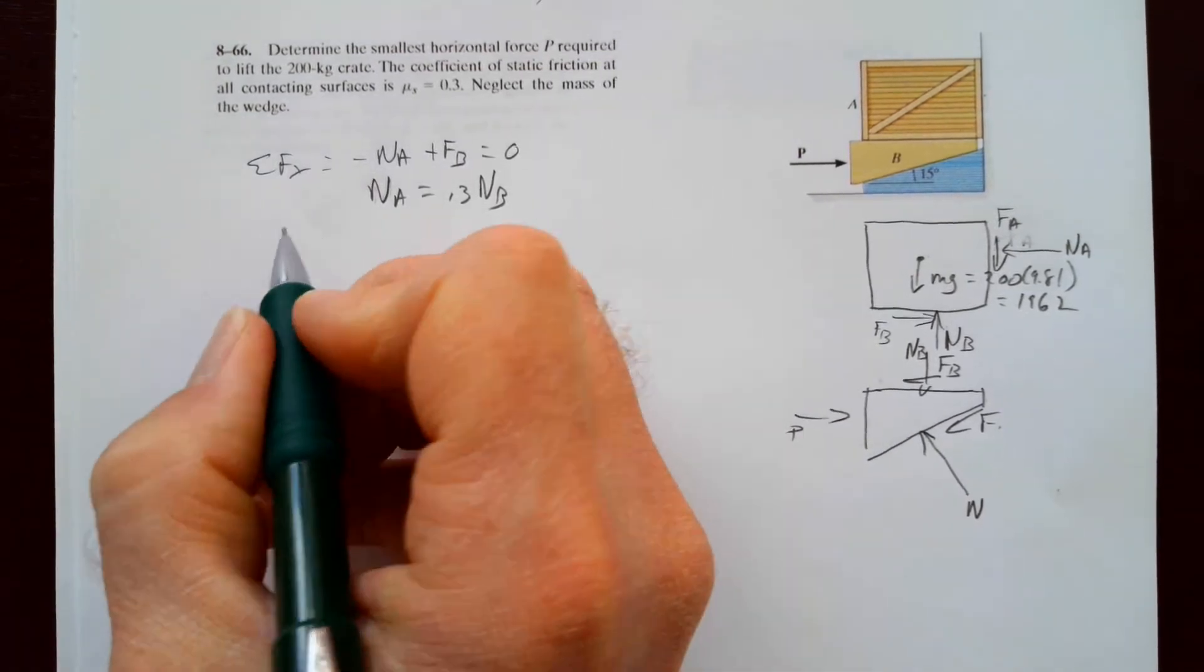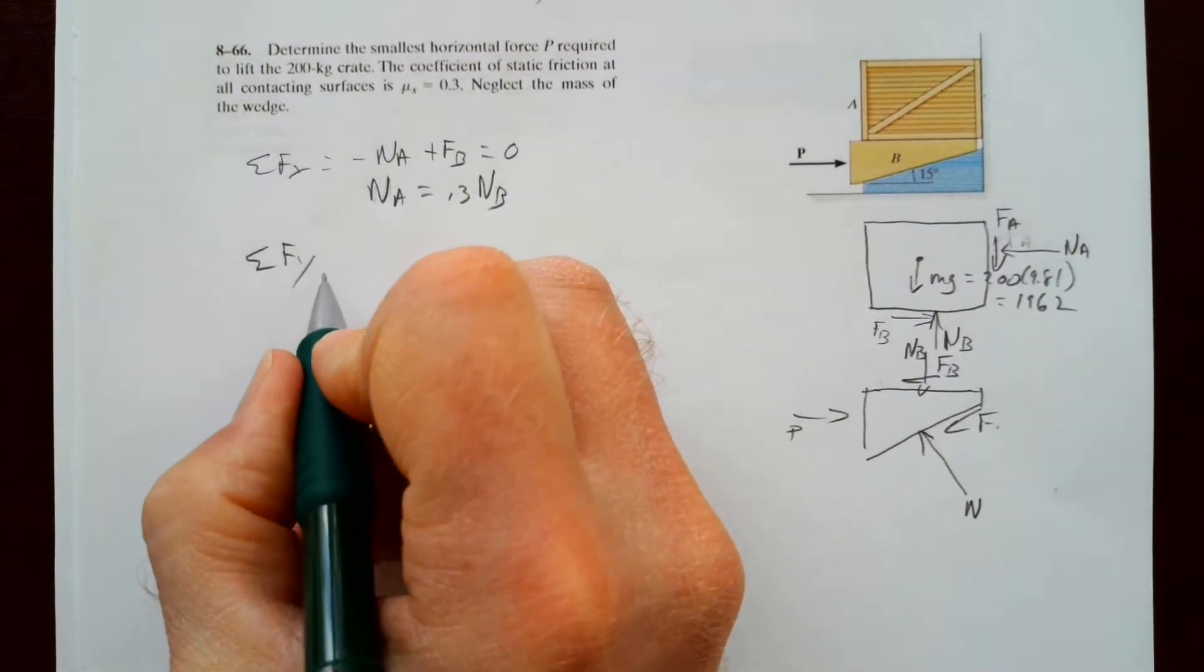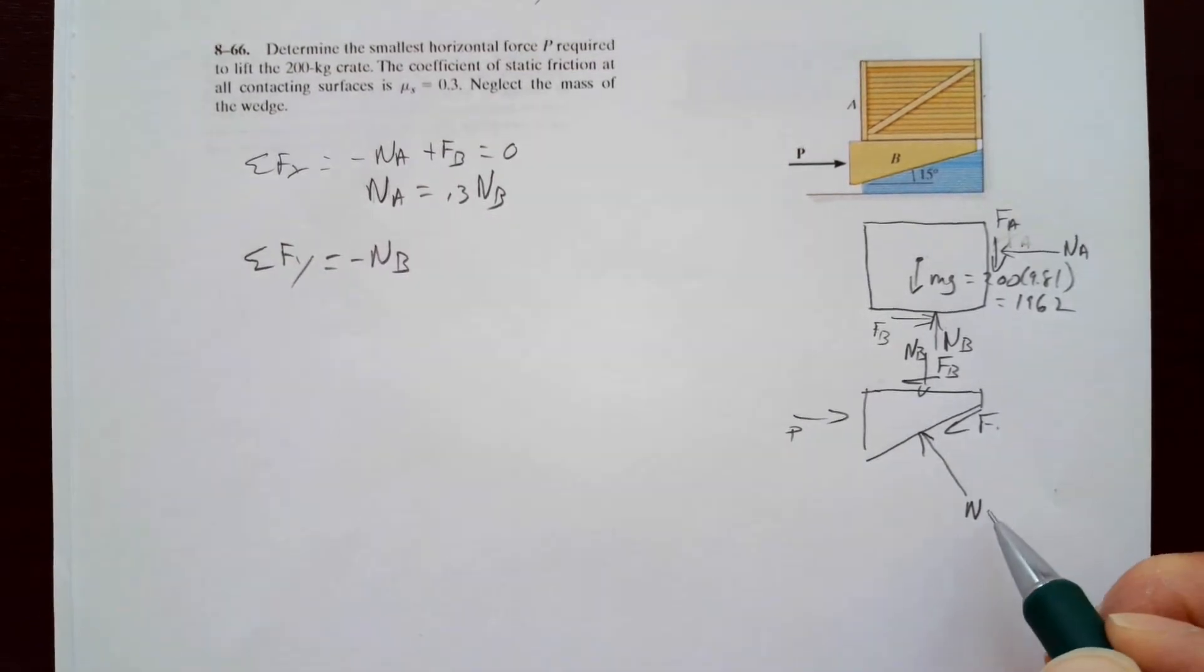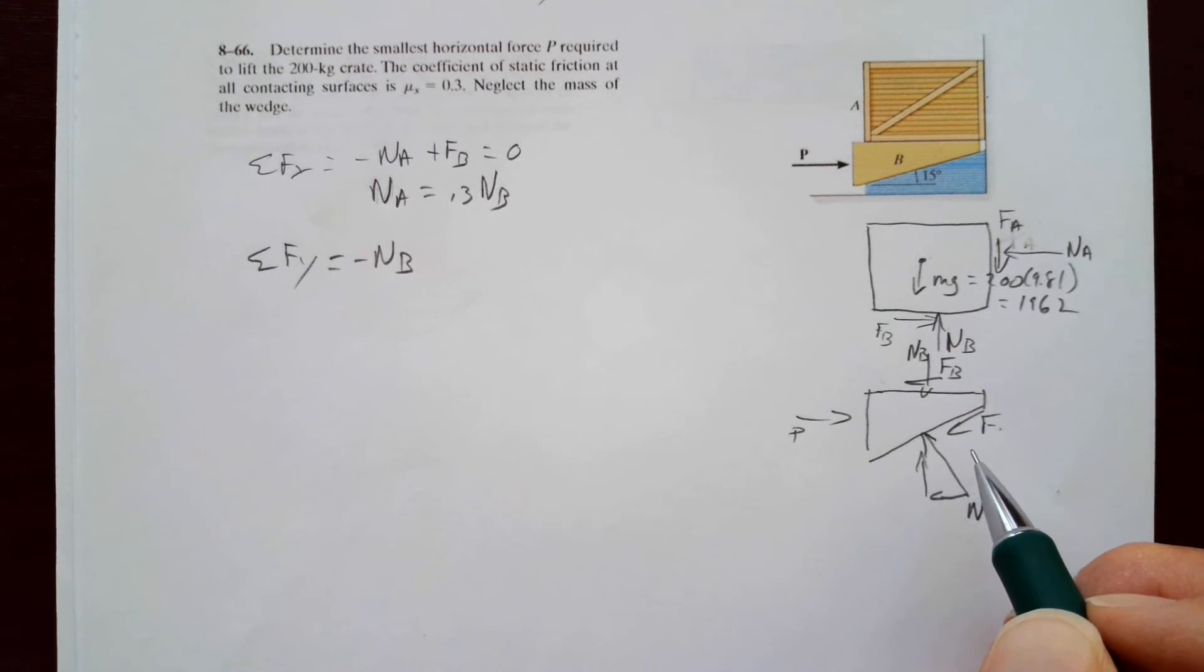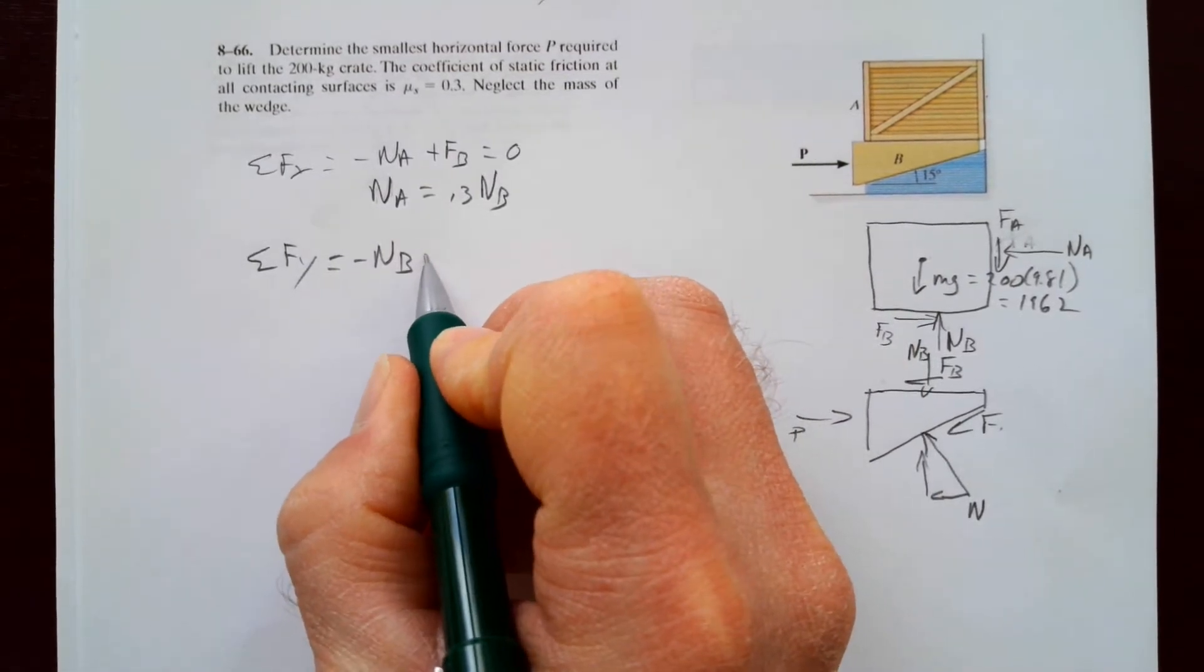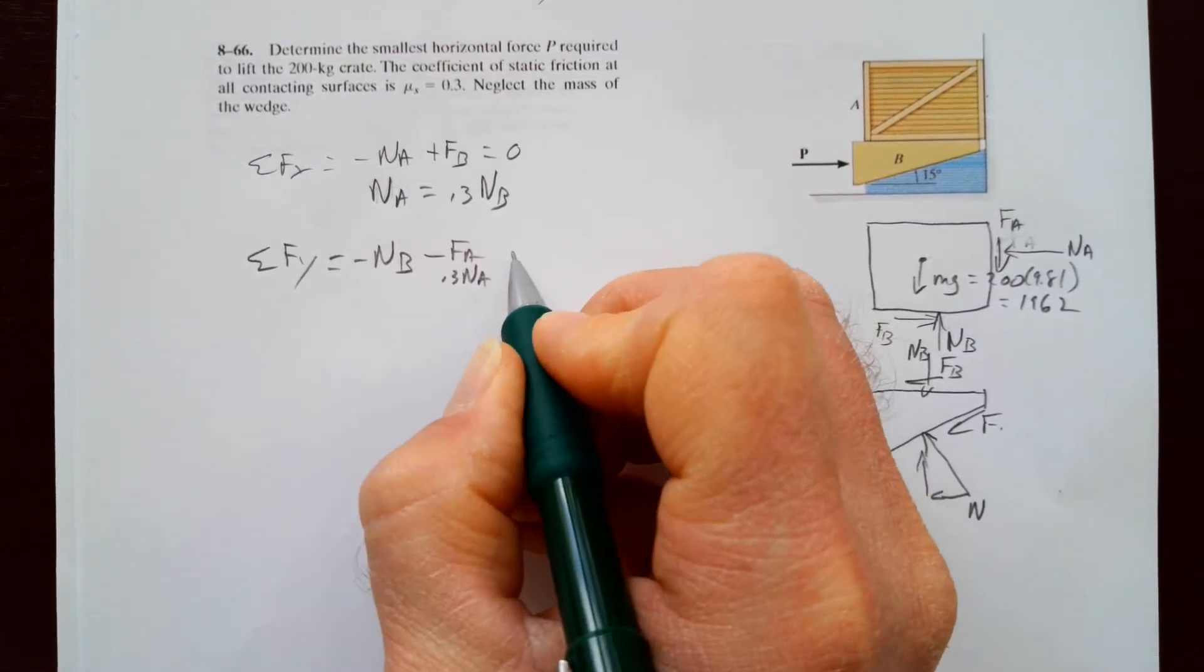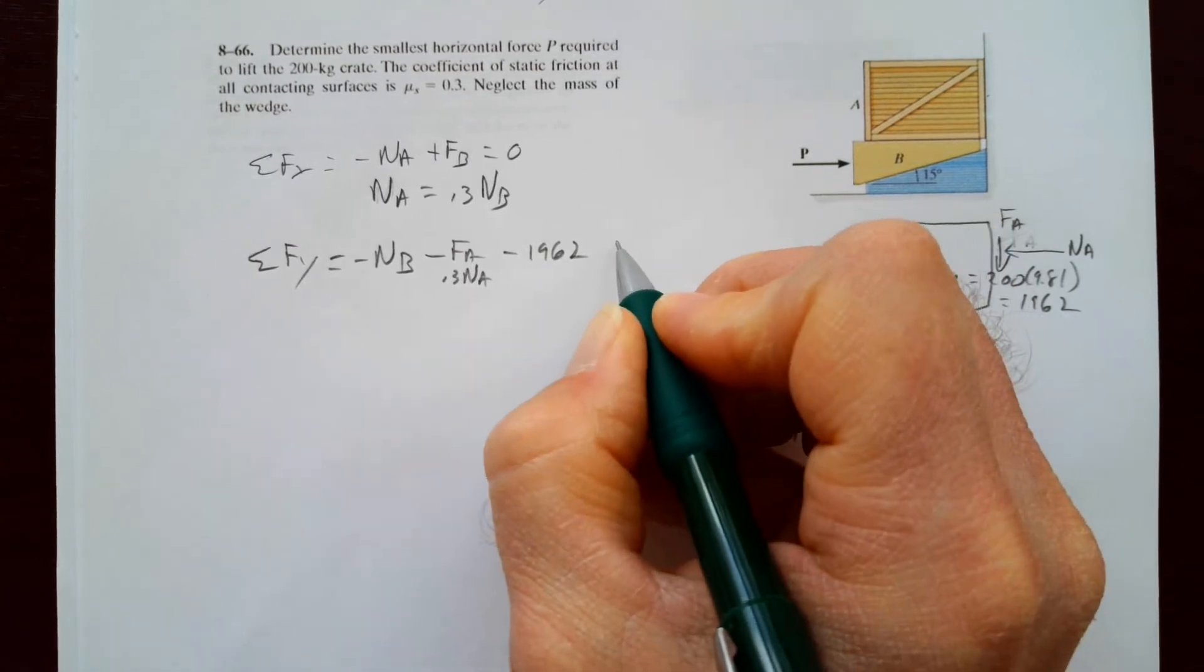Now let's sum the forces in the vertical, in the y. So in the y, we have NB down. We've got NA. Oh wait, we're doing this one right. So NA, we've got FA down. So minus FA, which is 0.3NA. Minus 1962 down. And that equals zero.